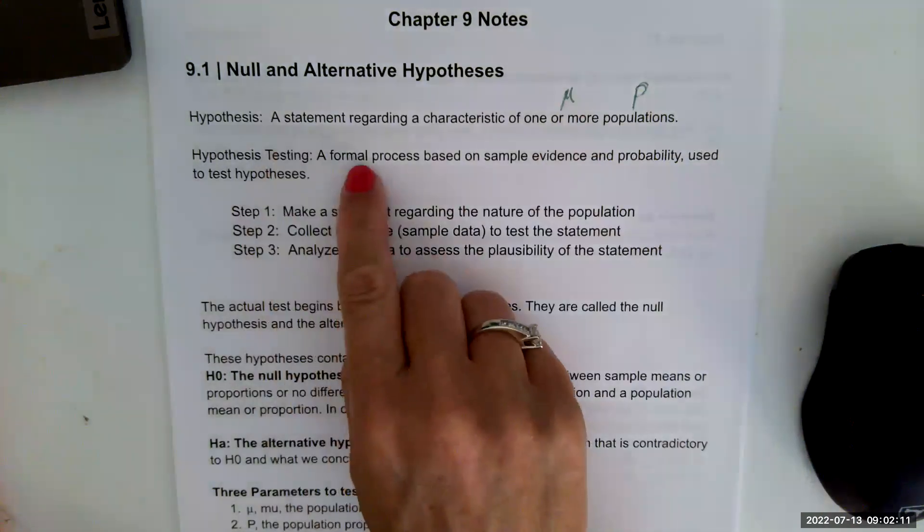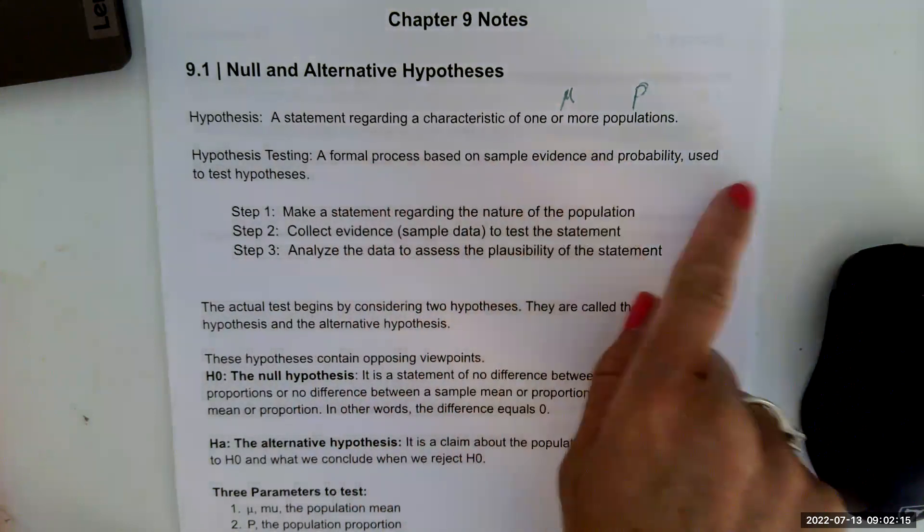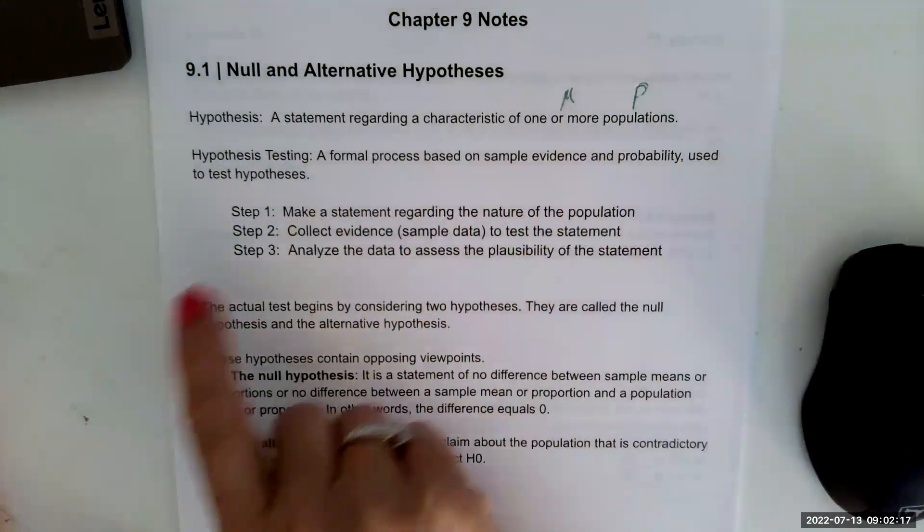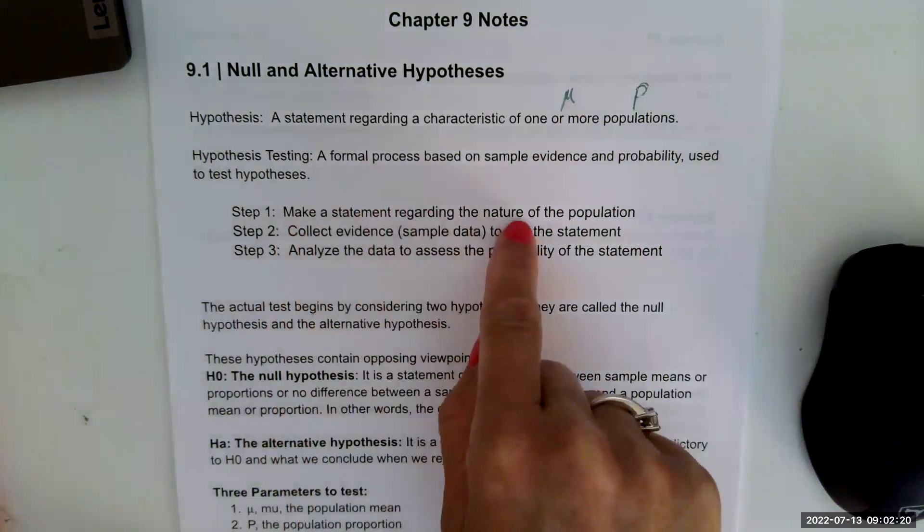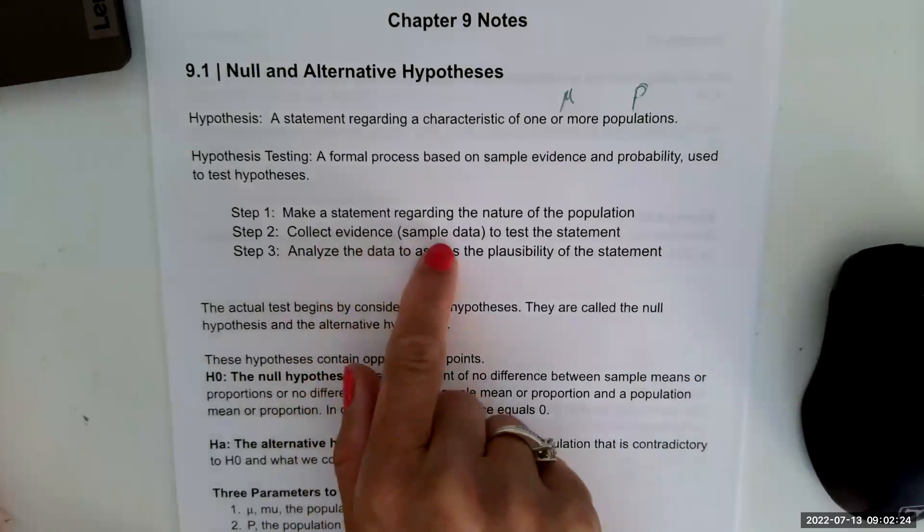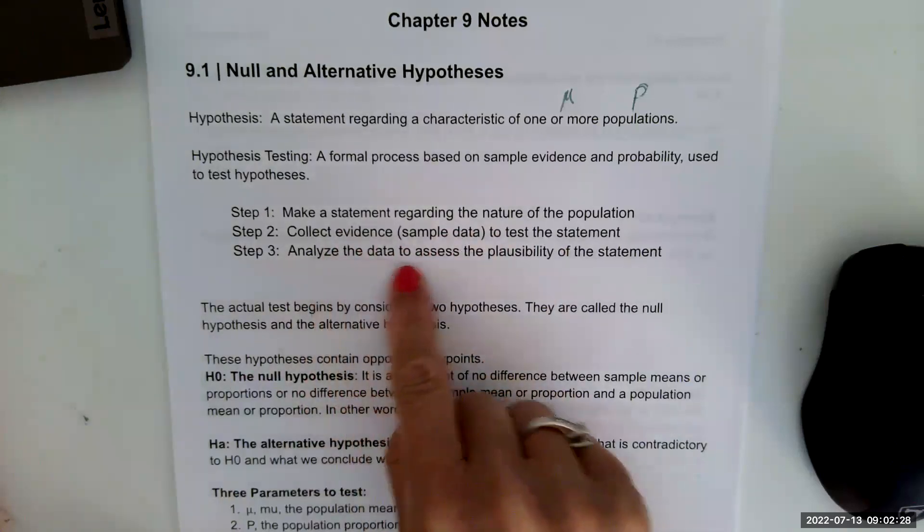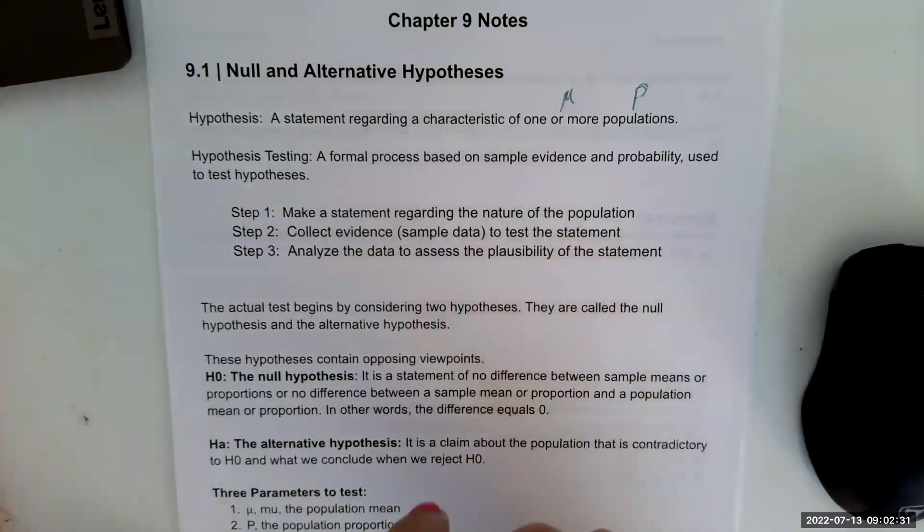Hypothesis testing is a formal process based on sample evidence and probability used to test hypotheses. Our first step is going to be to make a statement regarding the nature of the population. Then we're going to collect evidence, sample data to test the statement. And last, you're going to analyze the data to assess the plausibility or likelihood of the statement.